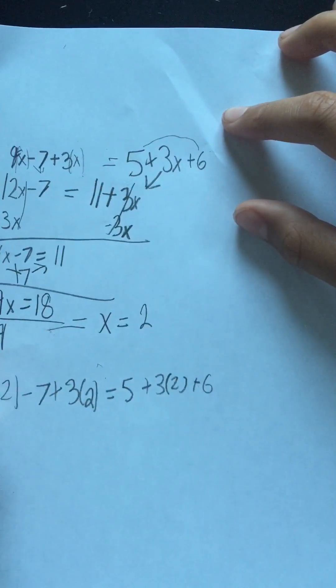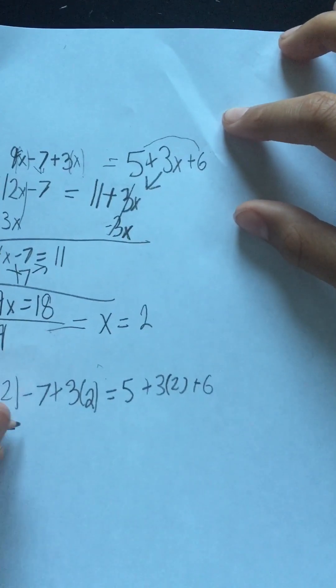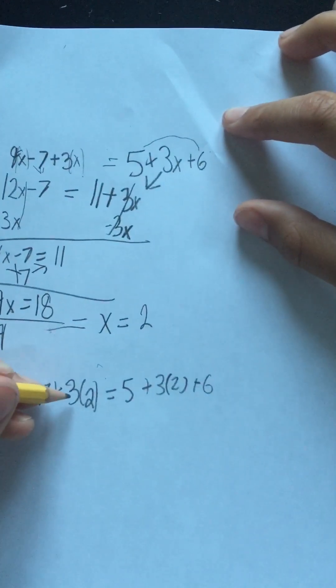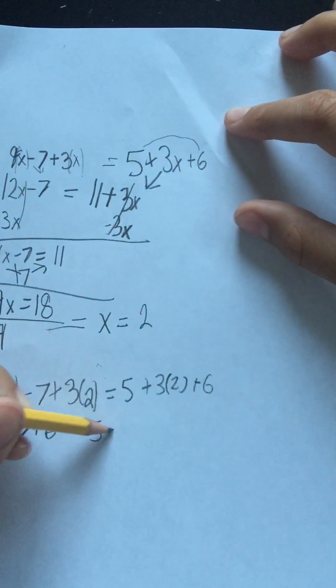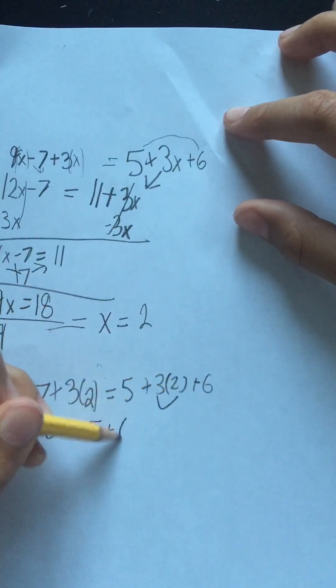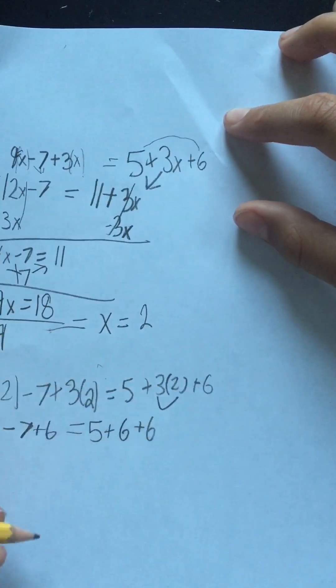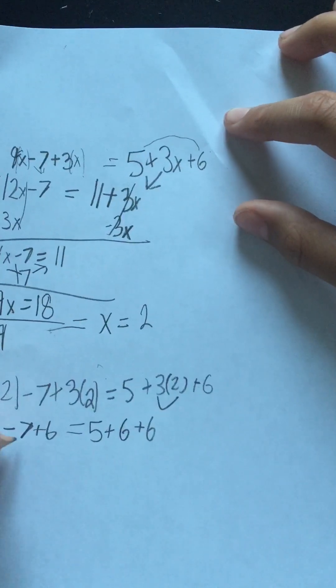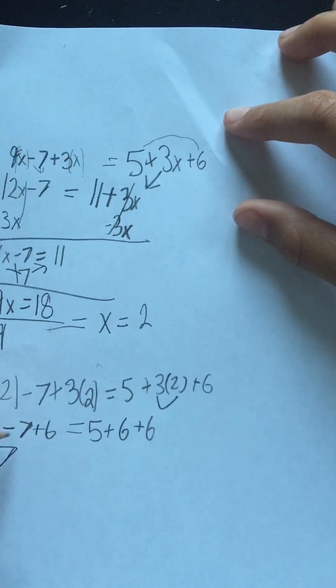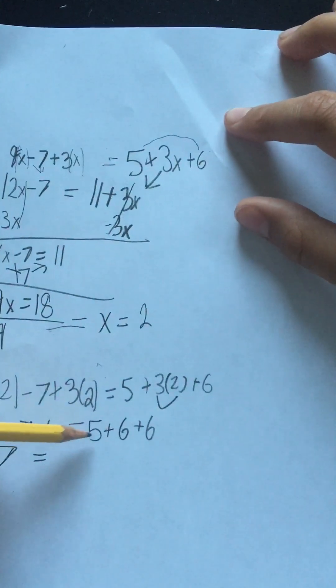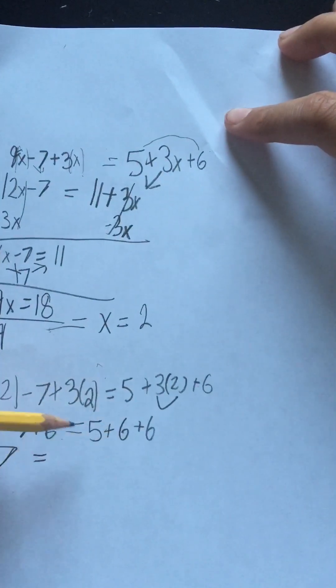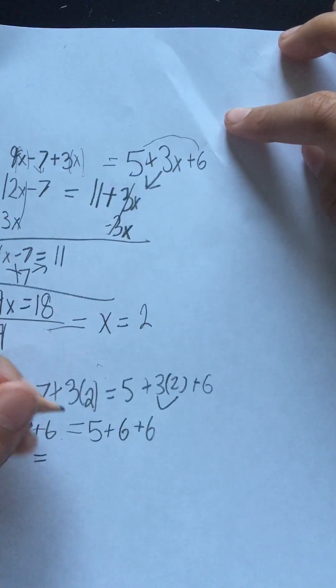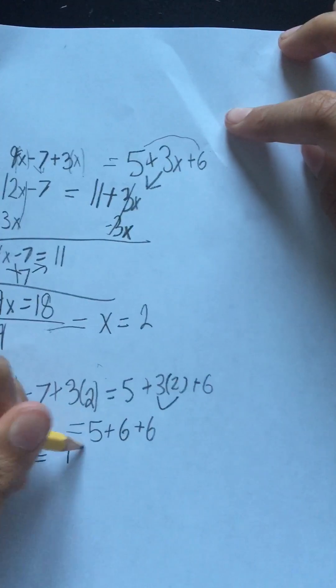If we multiply, we get 18 minus 7 plus 3 times 2 is equal to 6 plus 6. 18 minus 7 is equal to 11 plus 6, that's equal to 17. And over here, we have 5 plus 6 is equal to 11 plus 6 again, that is going to equal 17.